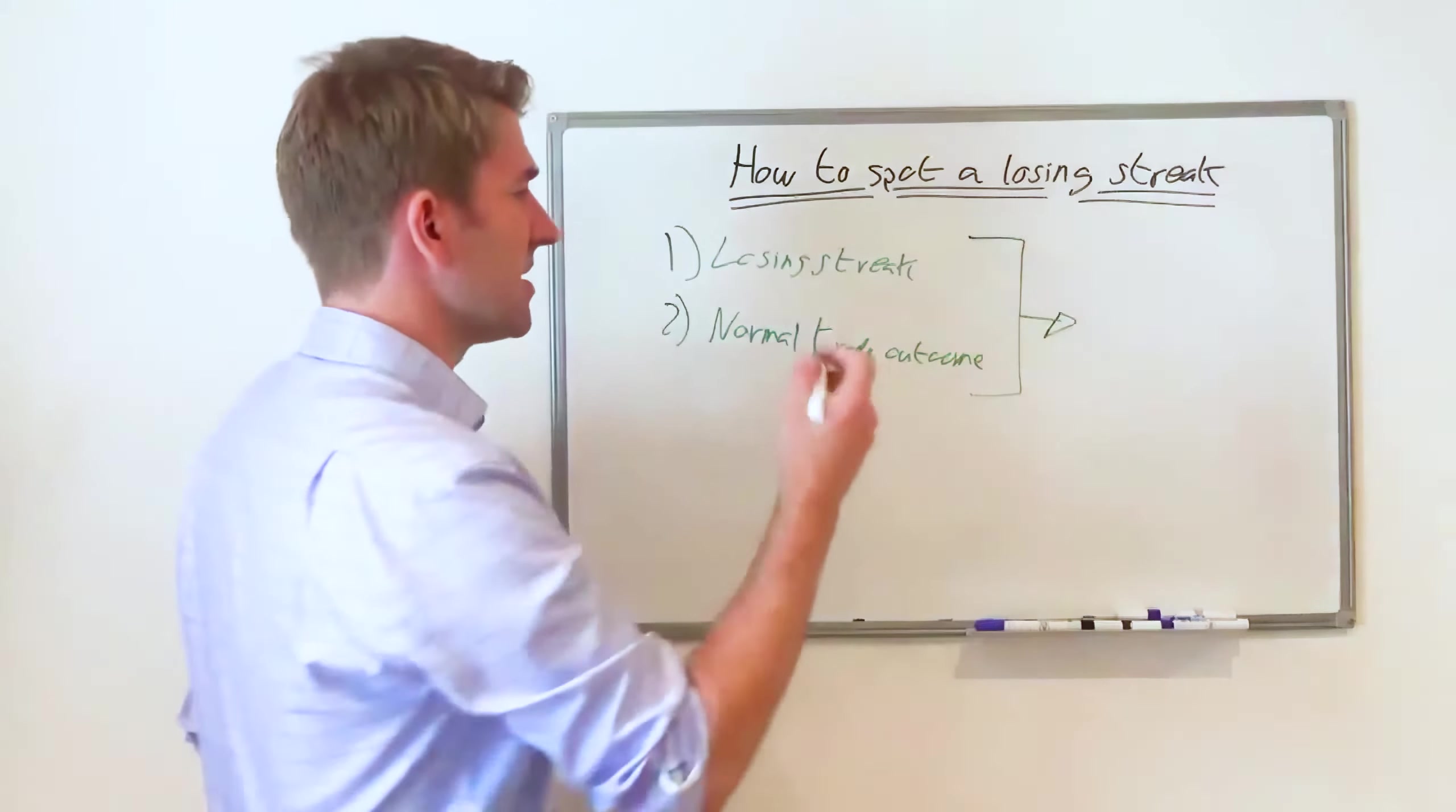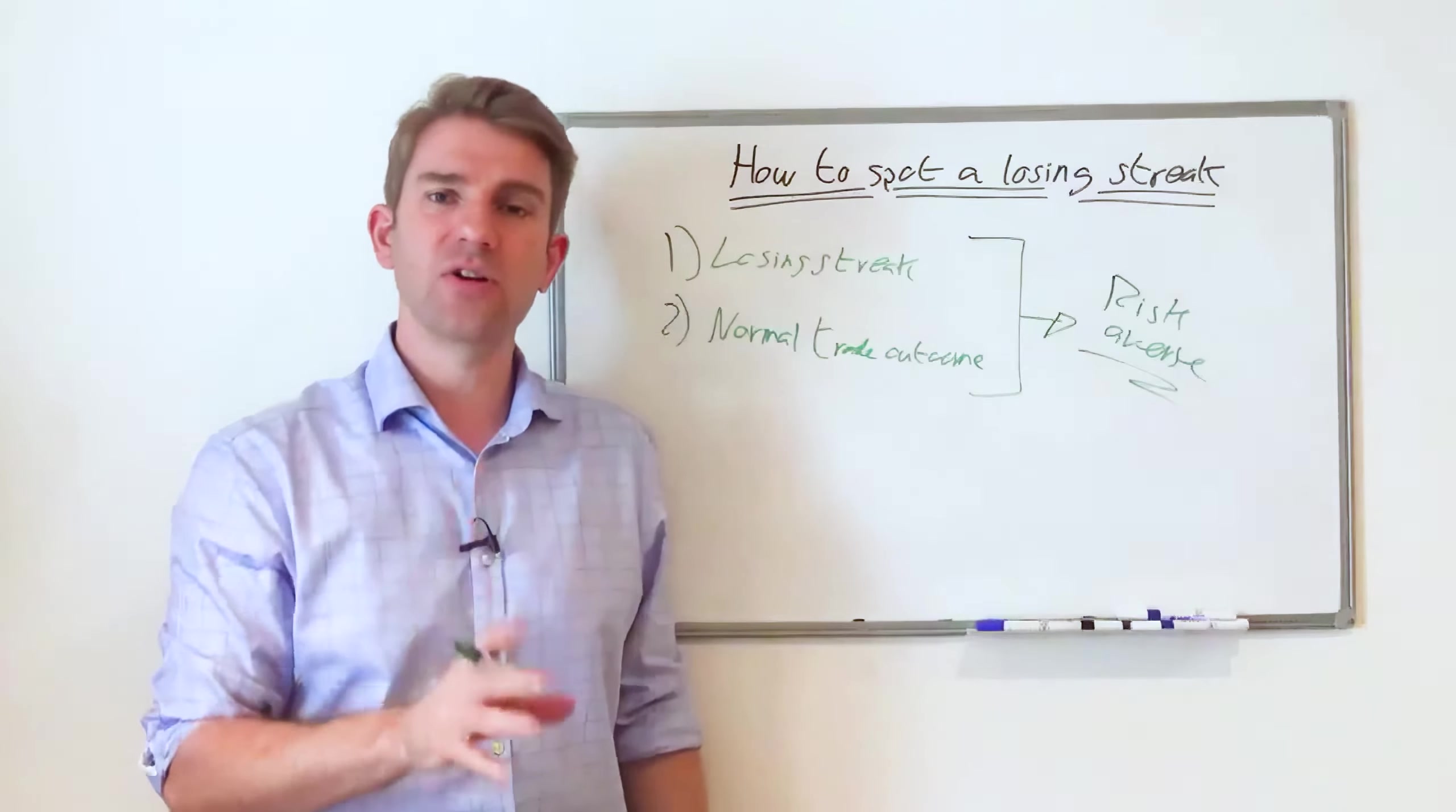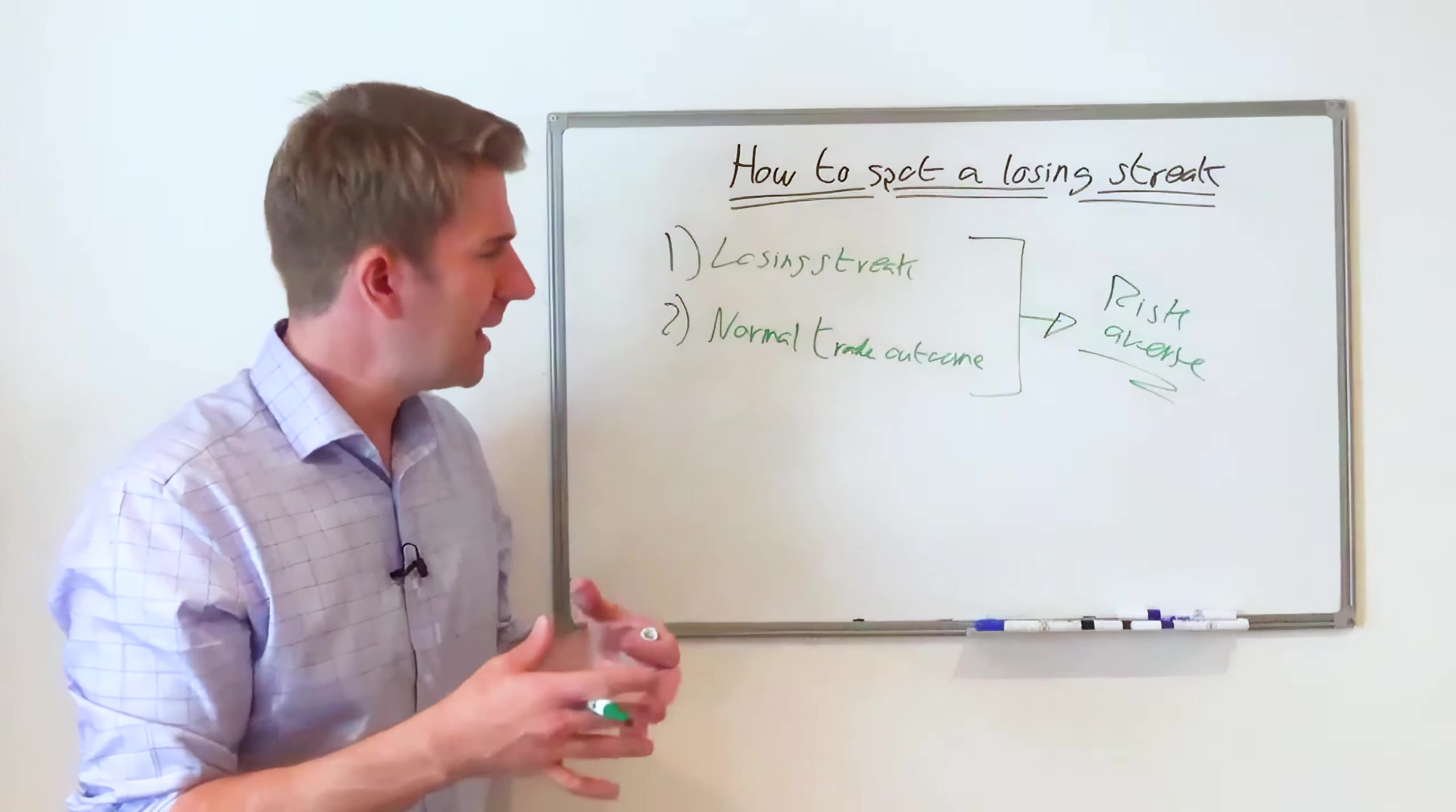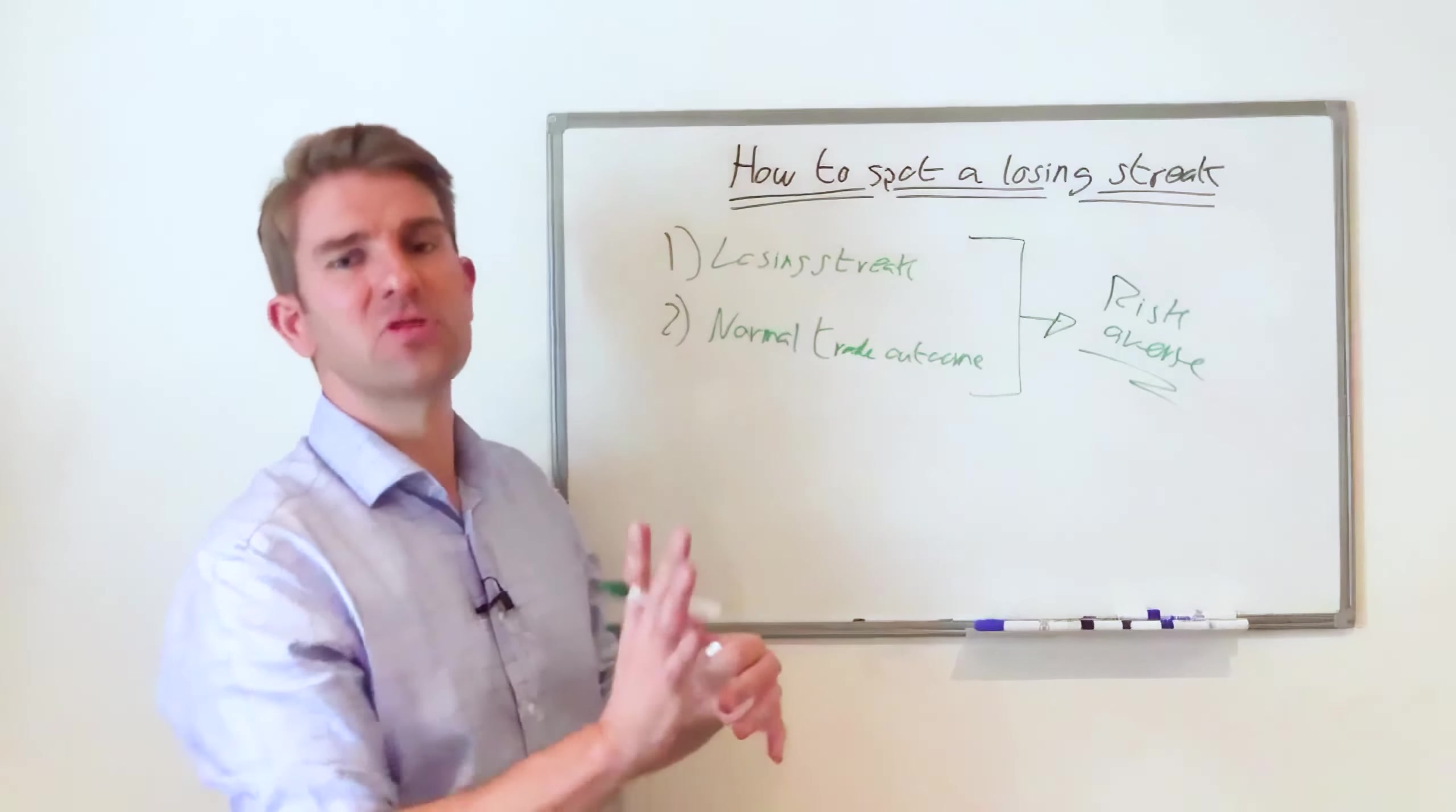The thing that a lot of people do is they see a losing streak and they immediately panic. They say, ah, things aren't working. It's right to be prudent and say, hey I don't want this to do too much damage to my trading account, I don't want to allow this to undo all the good work. But at the same time, you don't want to pull a profitable strategy just because, like I said about a thousand coin tosses, you've got an expected group of losers.